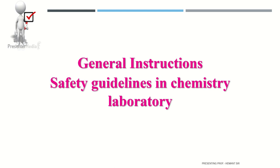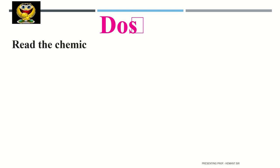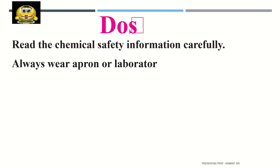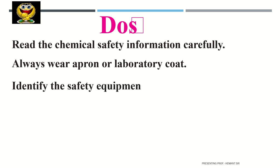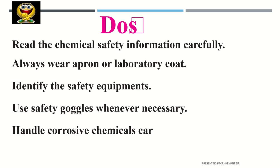These are the general instruction safety guidelines in chemistry laboratory. There are a few rules that you have to follow. First: read the chemical safety information carefully. Second: always wear an apron or laboratory coat. Identify the safety equipment, use safety goggles whenever necessary, and handle corrosive chemicals carefully, like acids.